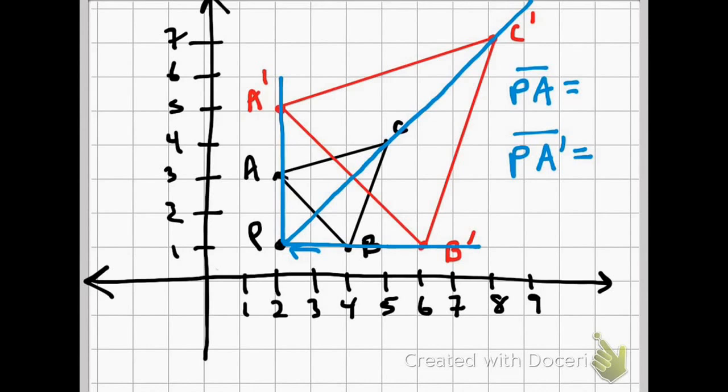From P to A is quite obviously just two units. And likewise, from P to A prime is one, two, three, four units.